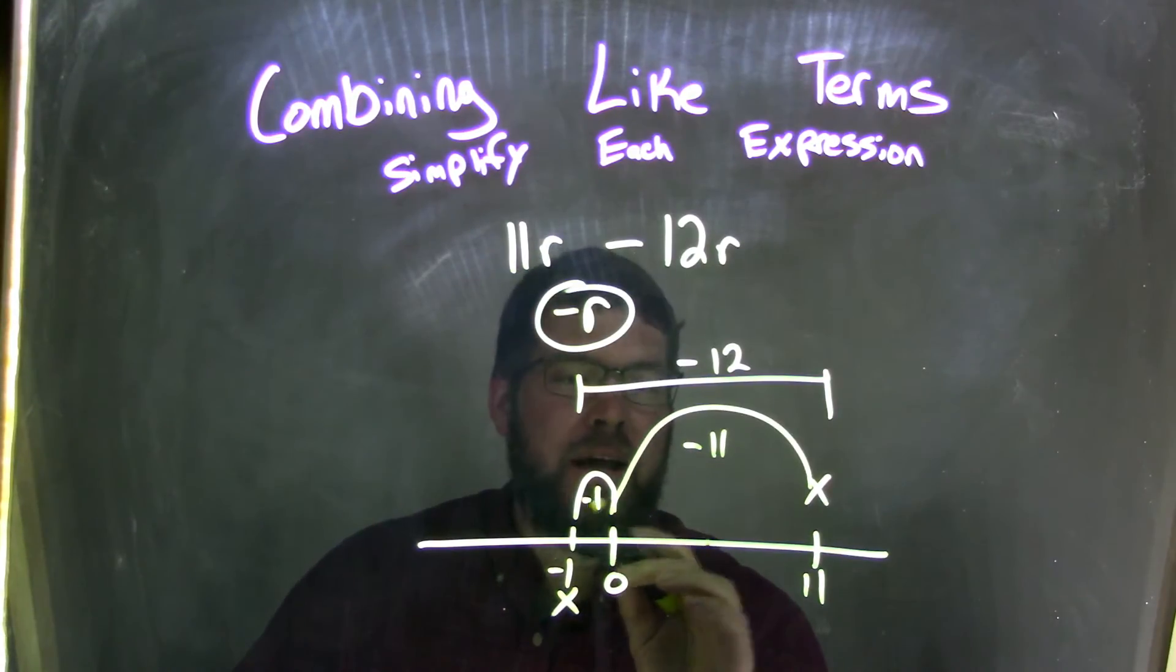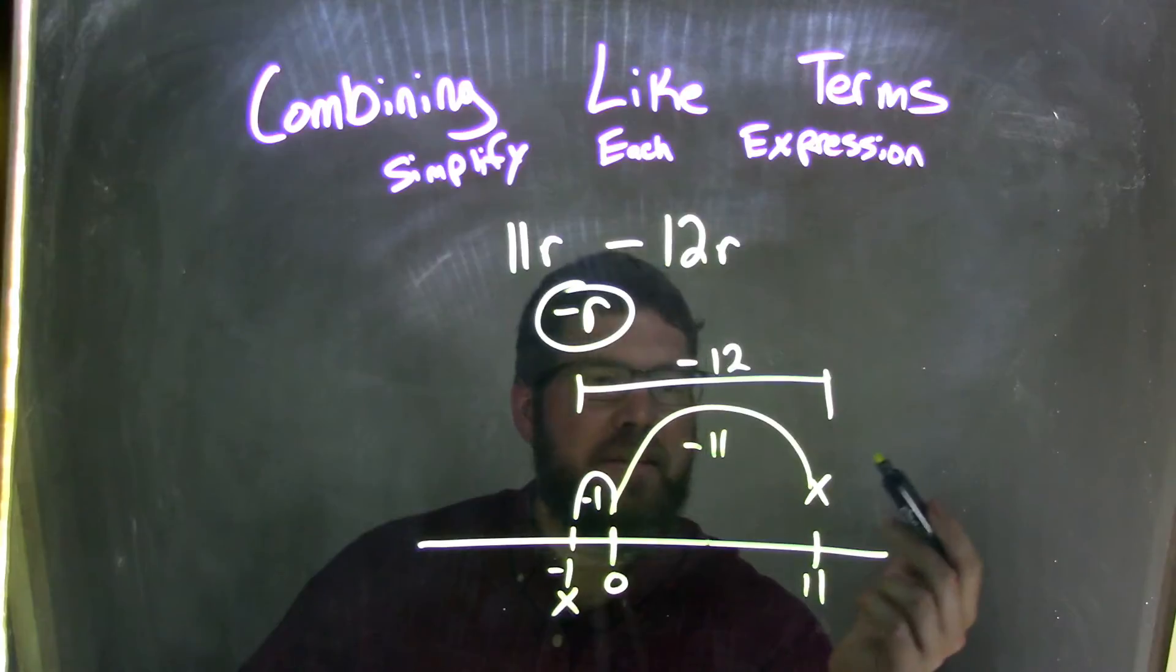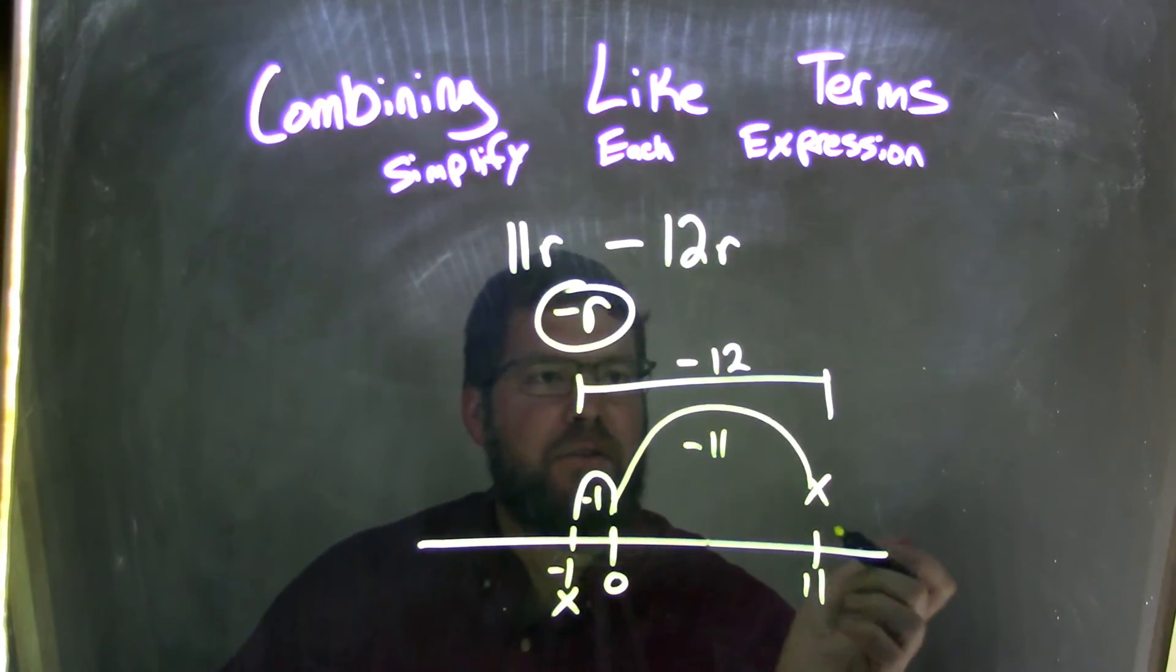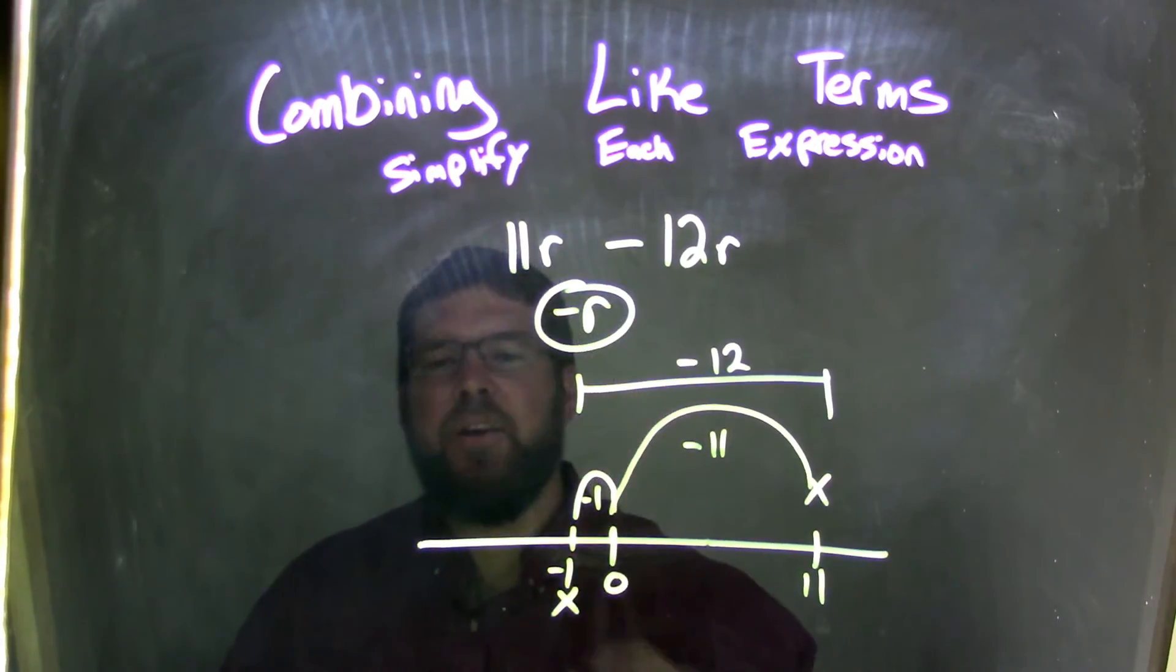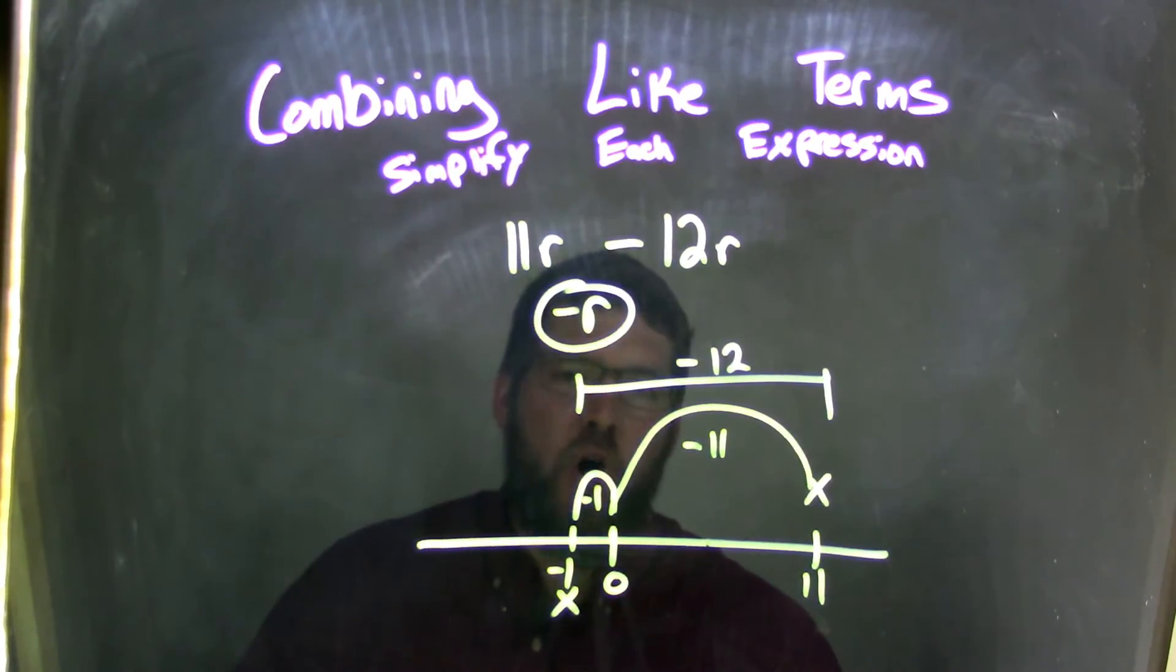our final answer, because negative 1 plus a negative 11 is negative 12, that's how much we subtracted, right? Subtracted 12r, 12 of them. We end with a negative 1. And so, negative 1r, or negative r, which is cleaner, is our final answer.